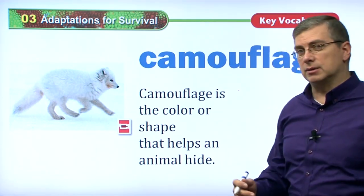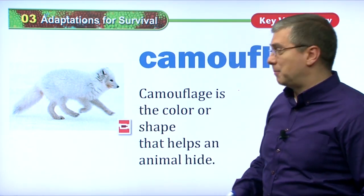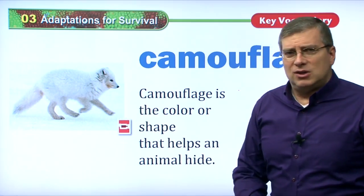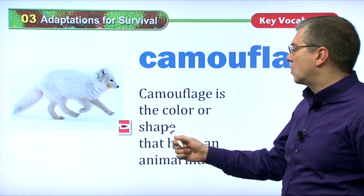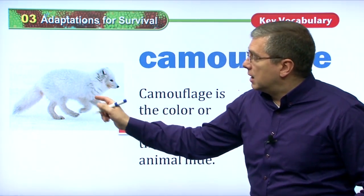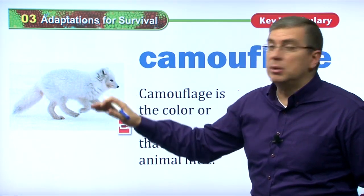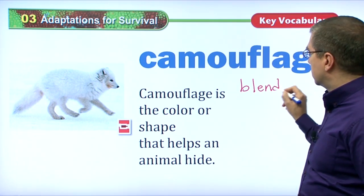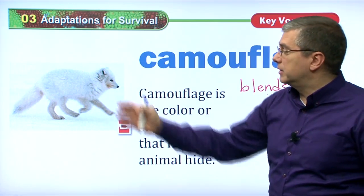Camouflage is another adaptation that animals will use. Look at this — it's probably not a puppy you want in your house; it's a baby wolf. Camouflage is a color or shape that helps an animal hide. You can see that this animal has white fur. It's in the cold snow, so it blends in to the background. It's hard to see.